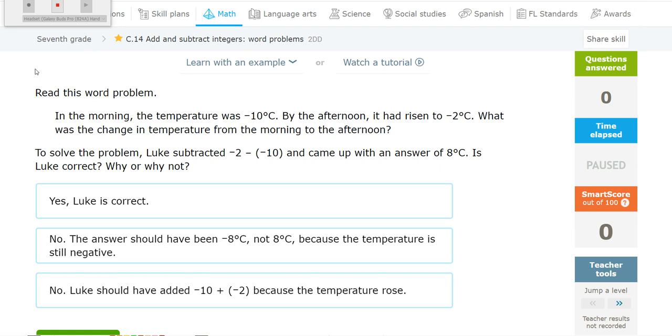In the morning, the temperature was negative 10 degrees. By the afternoon, it had risen to negative 2 degrees Celsius. What was the change in temperature from the morning to the afternoon? To solve the problem, Luke subtracted negative 2 minus negative 10 and came up with an answer of 8 degrees Celsius. Is Luke correct?